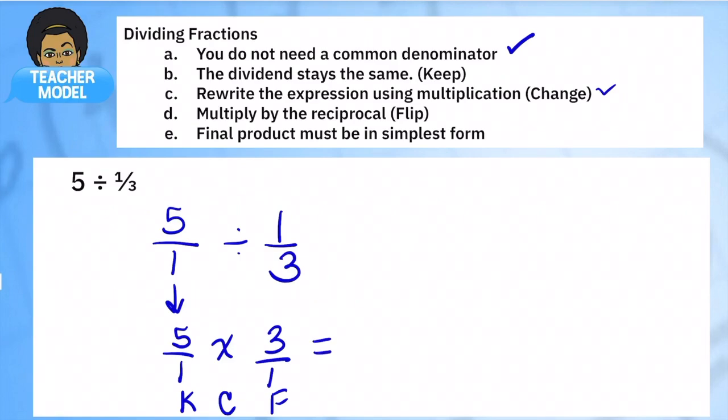And once you do that you simply now multiply the way we learned in our last lesson. 3 times 5 is 15, 1 times 1 is 1. So our answer is 15 over 1. That's improper so we're going to fix that using division. 15 divided by 1 is just 15. And that is our final answer. No need to simplify whatsoever.